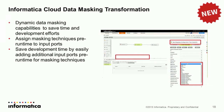The next enhancement is around the Data Masking Transformation, which is part of our cloud mapping designer. It helps you mask sensitive fields as part of your regular integration job — for example, if you have customer data you need to share with partners but want to mask certain sensitive fields. In R25, we've made the transformation more dynamic: you can now control which fields are masked at runtime, for example via a REST call, without having to make manual changes in the cloud mapping designer itself.